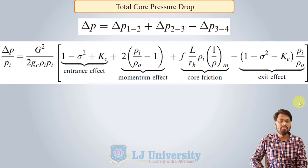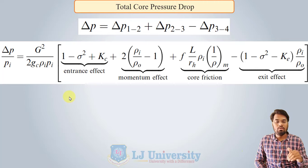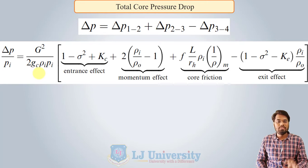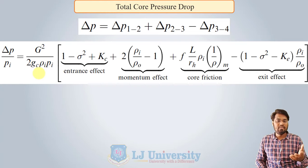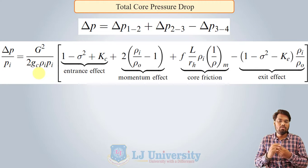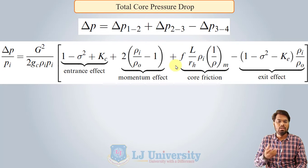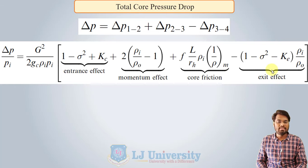This is the final pressure drop equation used for the compact heat exchanger. The first term is due to the entrance effect, the second is the momentum effect, the third is the core friction — which is the central portion and plays the major role — and the last term is due to the exit effect. This is the proof of how this equation is generated.